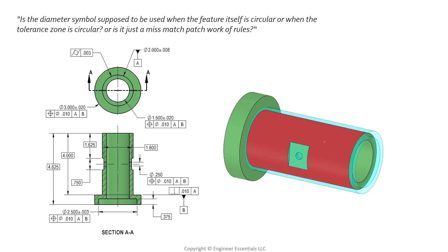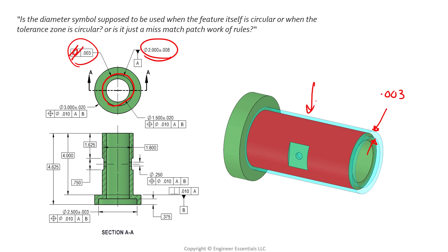The same applies to cylindricity — we're just not controlling location. We have two concentric cylinders, and the radial distance between them must be 0.003. They can grow and shrink in size because the size dimension controls the outside diameter, but cylindricity controls form between these two concentric cylinders. They're allowed to grow and shrink as long as they remain radially three thousandths apart. Again, this value is a linear radial distance, not a diametric one, so we don't use the diameter symbol.